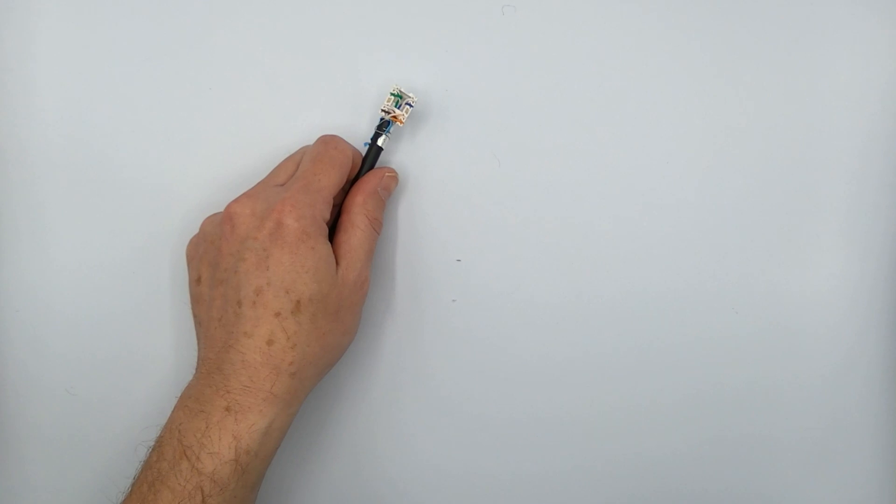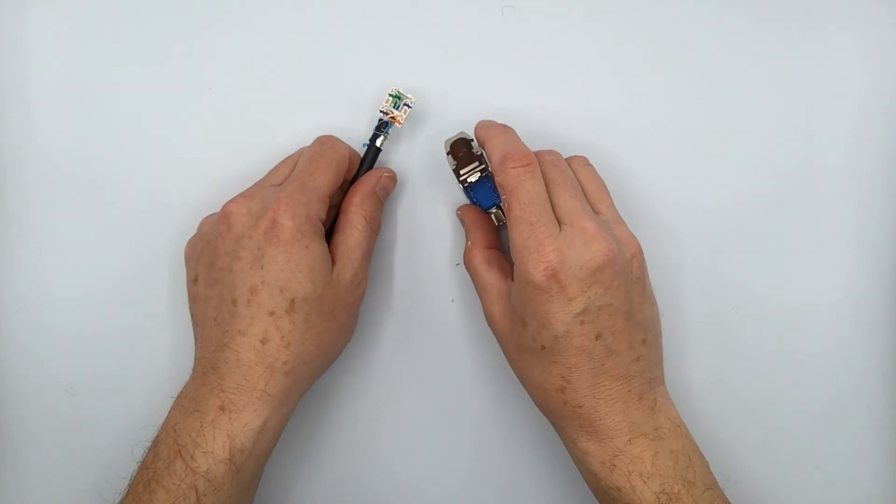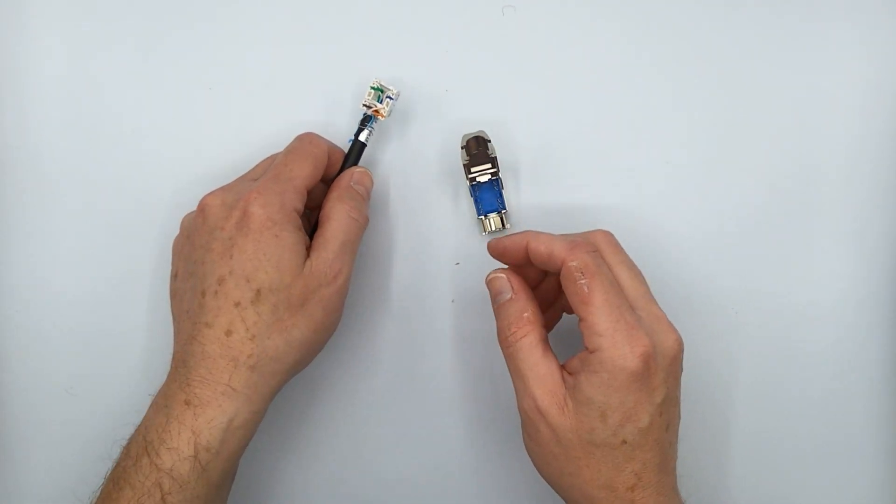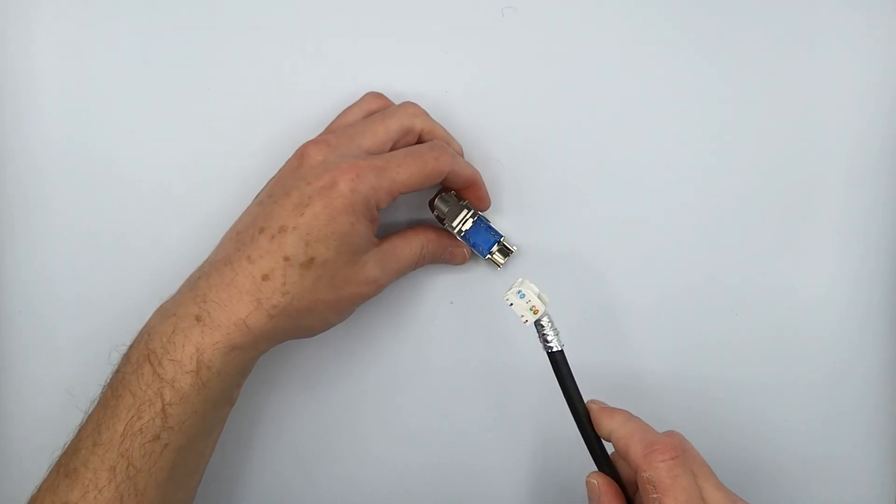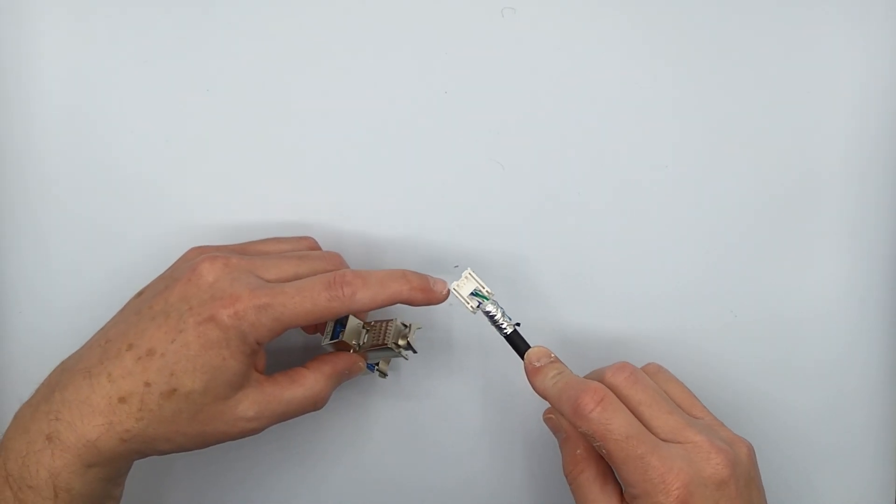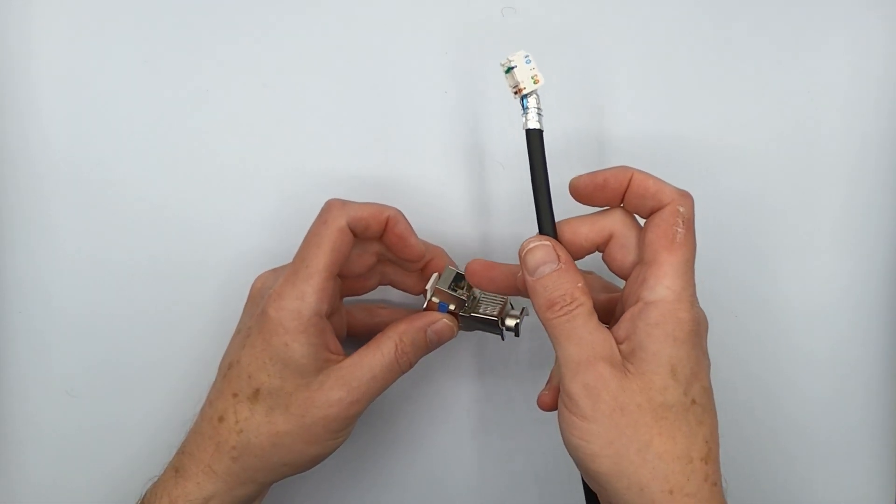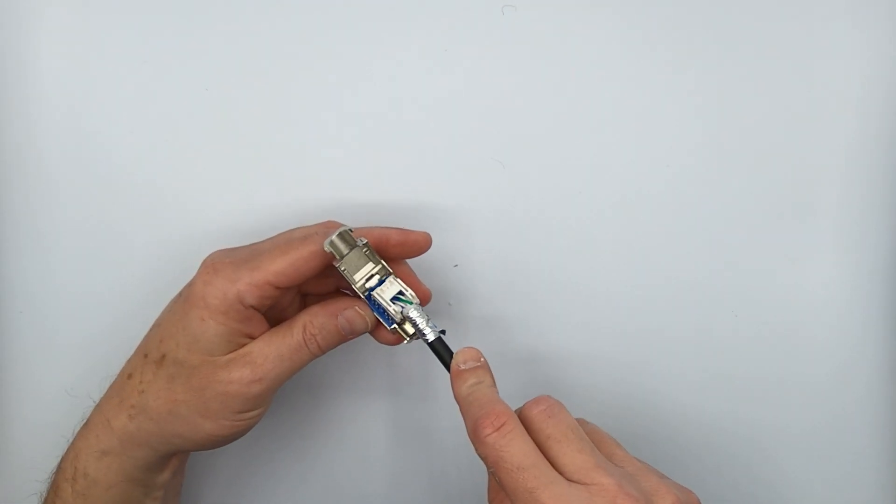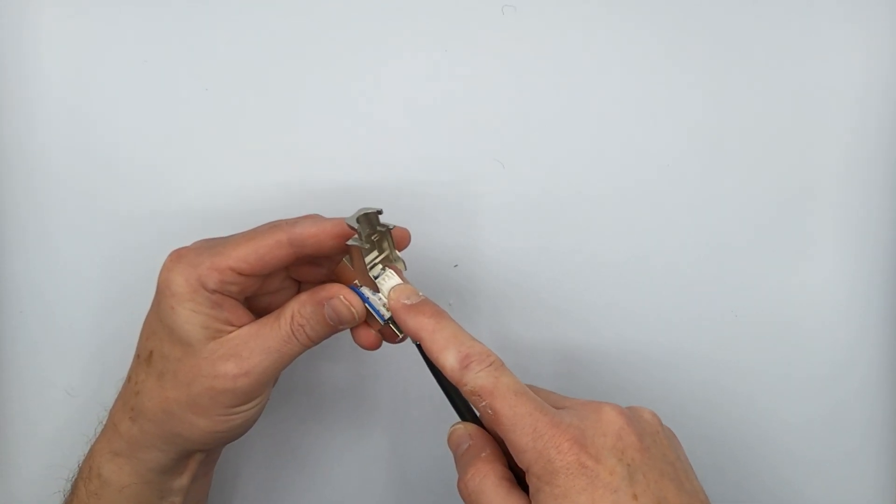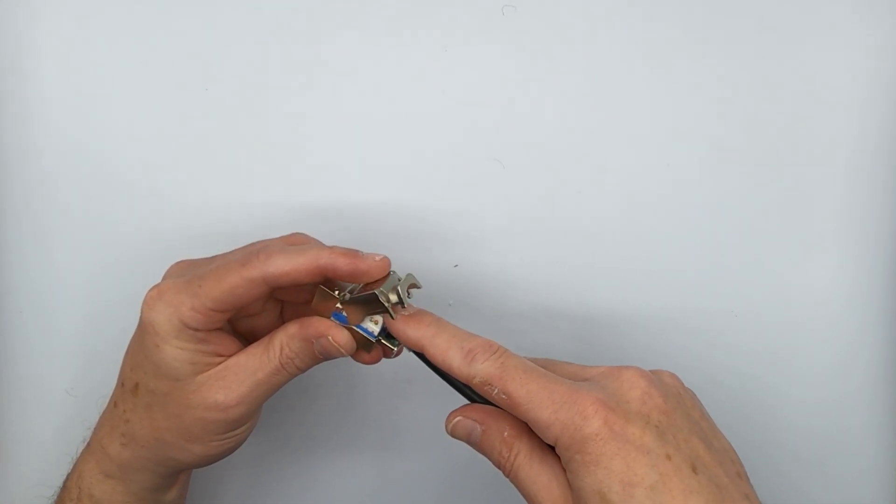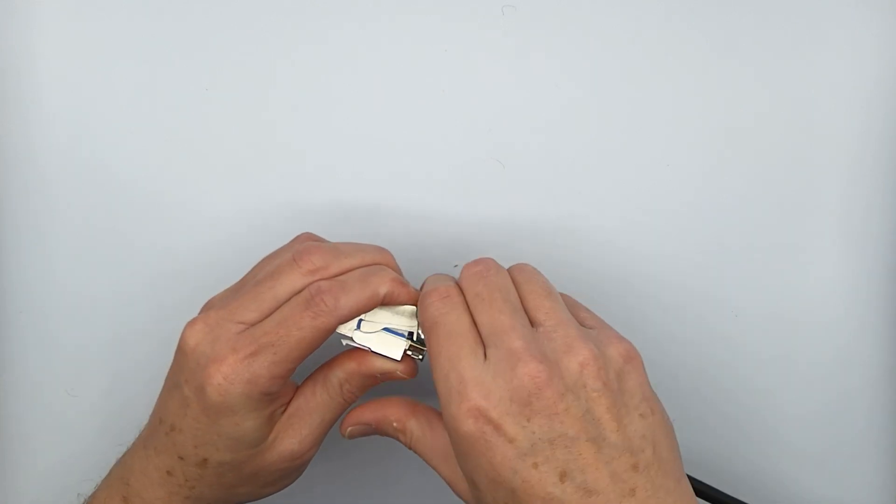The next thing you want to do is actually get out your actual jack housing here and you're going to notice that there's an arrow on here pointing that way. And that needs to point towards the RJ45 port. So just simply place it in here and it only goes on one way and then start to close it.